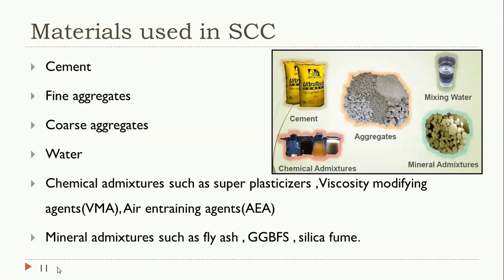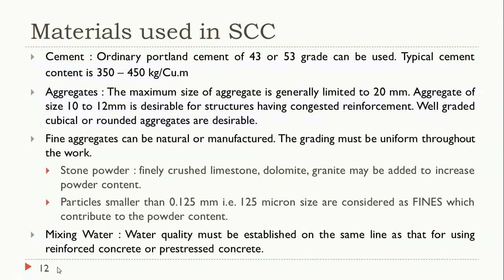Fly ash reduces thermal cracks by providing low heat of hydration. GGBFS also provides low heat of hydration and gives strength at later stages. Silica fume, which contains a high percentage of silica, gives high strength at initial stages, similar to fly ash and GGBS at later stages. Depending on the requirement, these mineral admixtures can be used along with other materials.